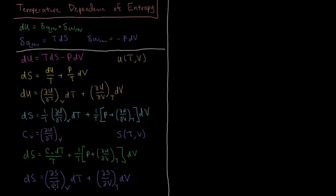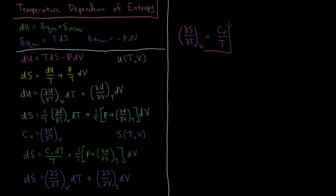The only term that depends on dT is C_V/T. Comparing terms, we find that the partial derivative of entropy with respect to temperature at constant volume is equal to the constant-volume heat capacity over the temperature: (∂S/∂T)_V = C_V/T.